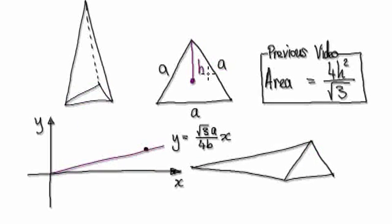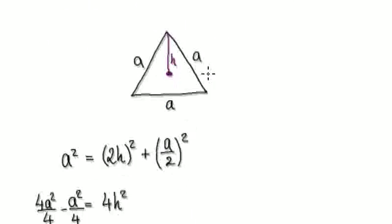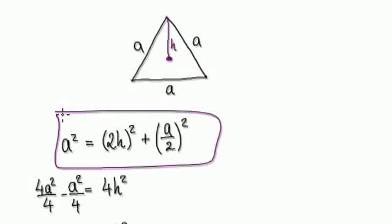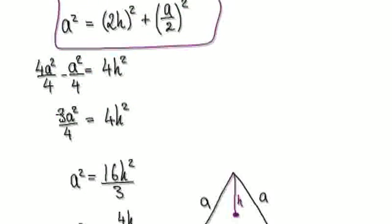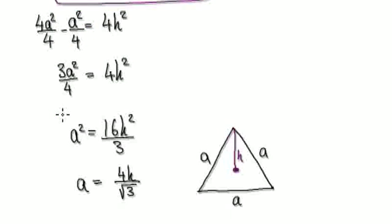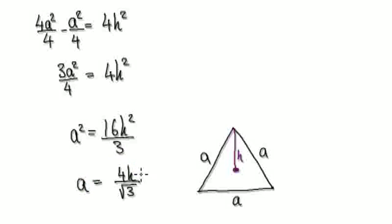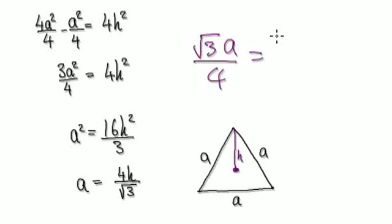Going back to the previous video: when given a, we can work out h. We use Pythagoras here — that takes us to the result. To rearrange: multiply both sides by √3, then divide by 4. That gives us h. So when given a, we can work out h.